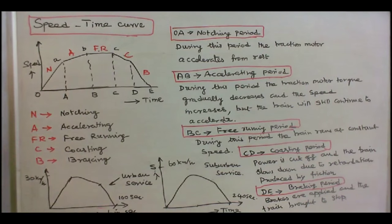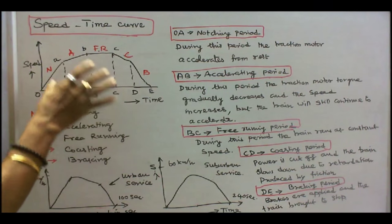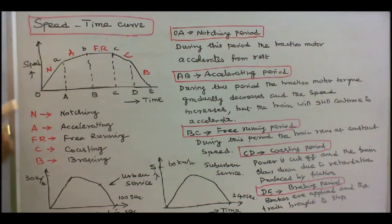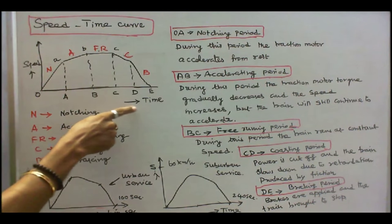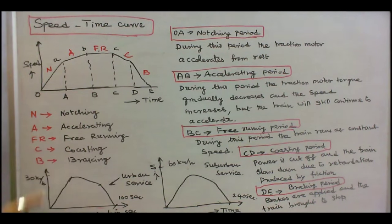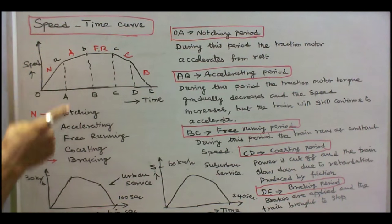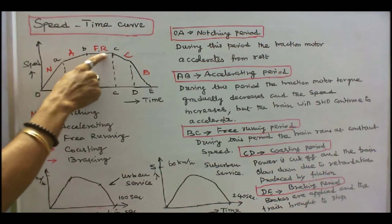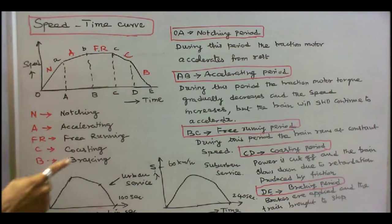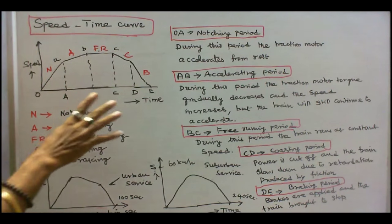This is a typical speed-time curve. Here the vertical axis is speed in kilometers per hour, and the horizontal axis is time in seconds. N is notching, A is accelerating, F4 is free running, C is coasting, and B is braking.